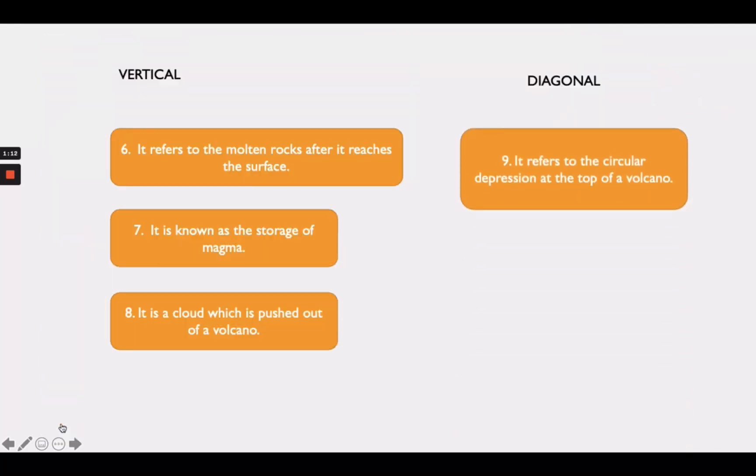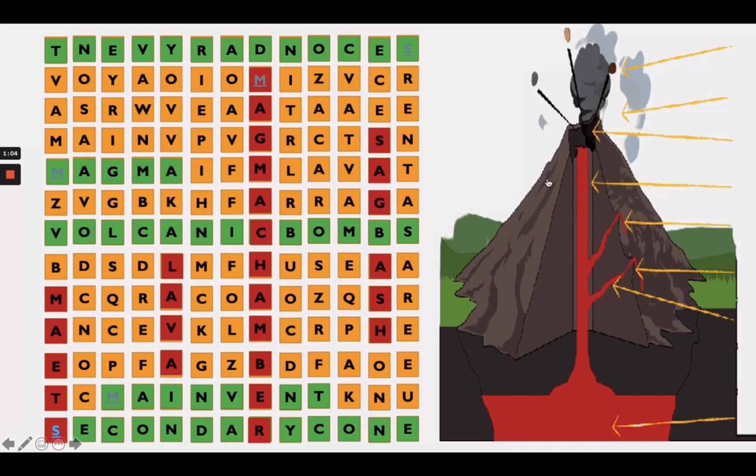For the last question, you can find it diagonally. It refers to circular depression at the top of a volcano. Can you guess? Where is it? That's right! Crater! Good job! Excellent!